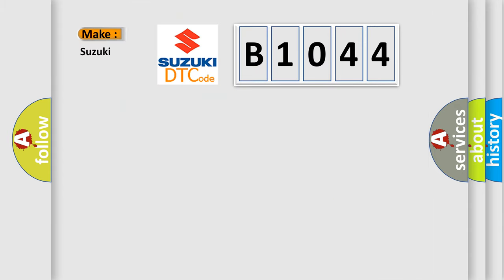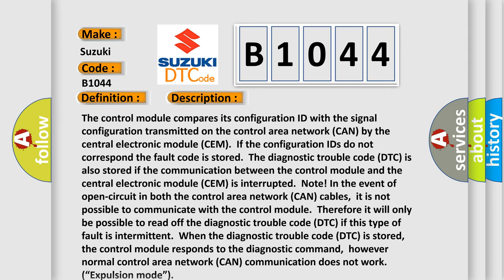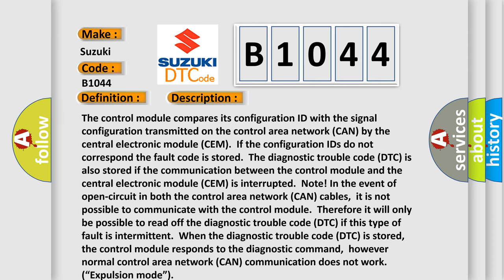So, what does the diagnostic trouble code B1044 interpret specifically? It is a Suzuki manufacturer code. The basic definition is: Configuration fault — faulty configuration. The control module compares its configuration ID with the signal configuration transmitted on the CAN (Control Area Network) by the Central Electronic Module (SEM). If the configuration IDs do not correspond, the fault code is stored. The DTC is also stored if the communication between the control module and the SEM is interrupted.